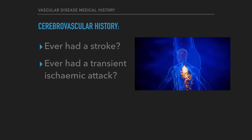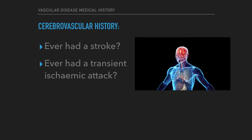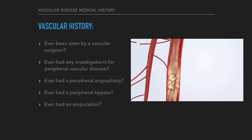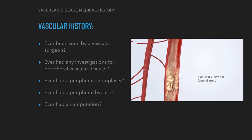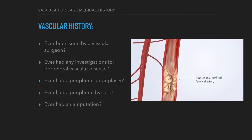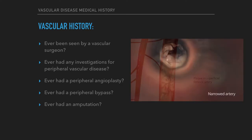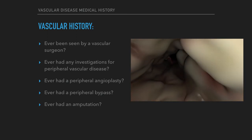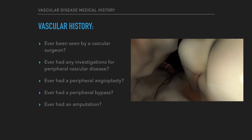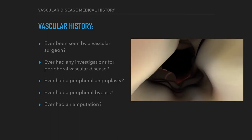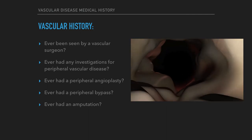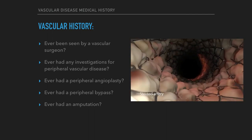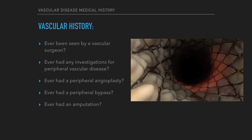Cerebrovascular history: have they ever had a stroke or transient ischemic attack? Vascular history: have they ever been seen by a vascular surgeon? Have they ever had any investigations for peripheral vascular disease? Have they ever had a peripheral angioplasty? Have they ever had a peripheral bypass? Have they ever had an amputation?